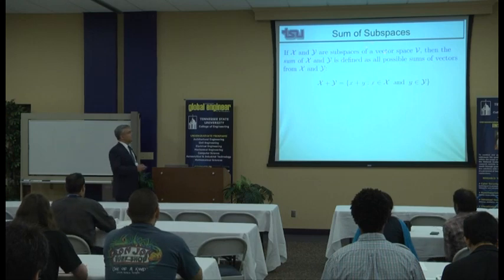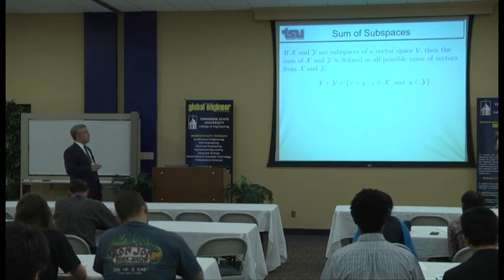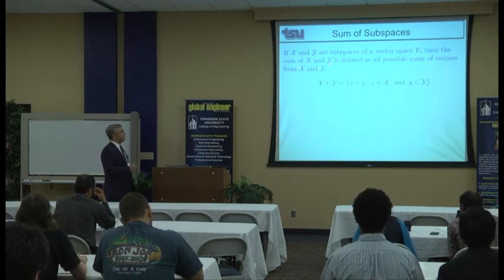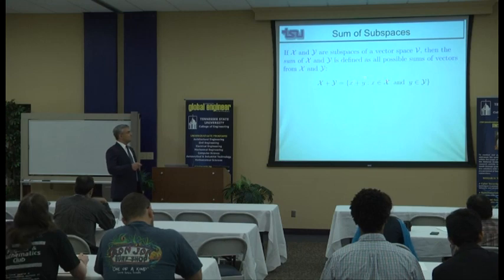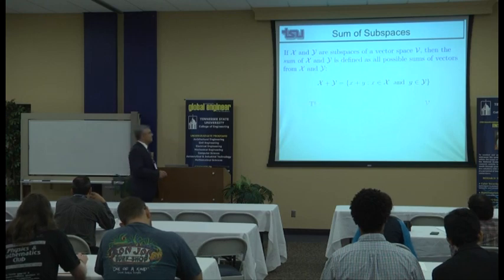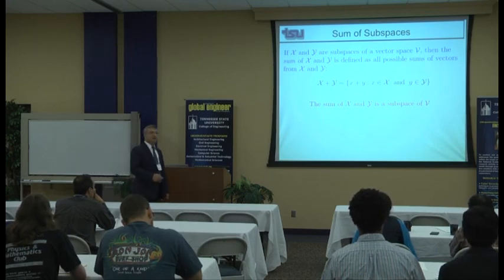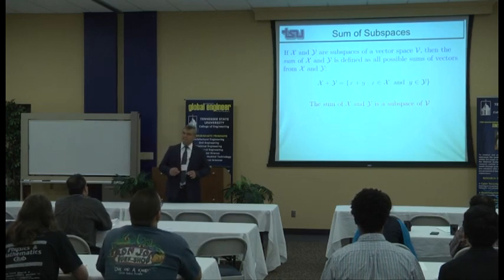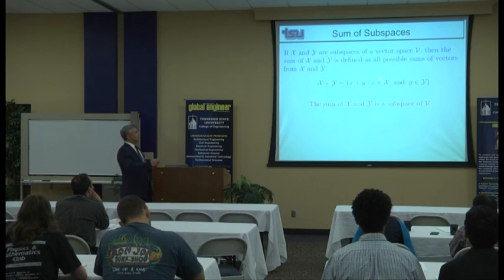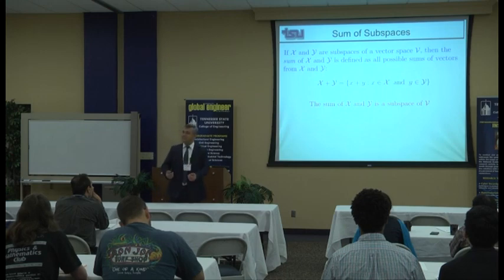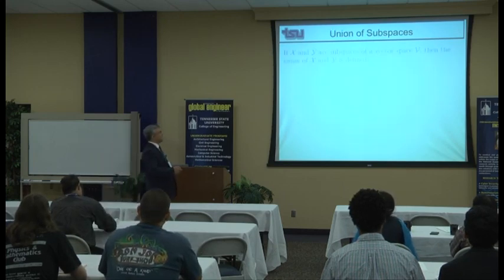A subspace W is a subset of vector space V that is also a vector space with the same addition and multiplication operations. To check if something is a subspace, you check closure with respect to addition and multiplication. Sum of subspaces: if X and Y are subspaces of V, the sum X+Y is defined as all possible sums of vectors from X and Y. The sum of two subspaces is also a subspace of V — it is closed with respect to addition and scalar multiplication.